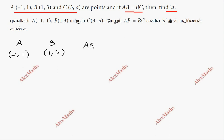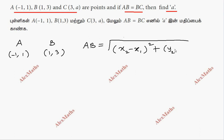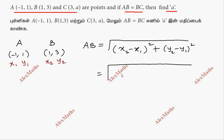For AB, we use the distance formula. The distance formula is the square root of (x2 minus x1) whole square plus (y2 minus y1) whole square, where the points are x1, y1 and x2, y2. So this is the root of (1 minus minus 1) whole square plus (3 minus 1) whole square.